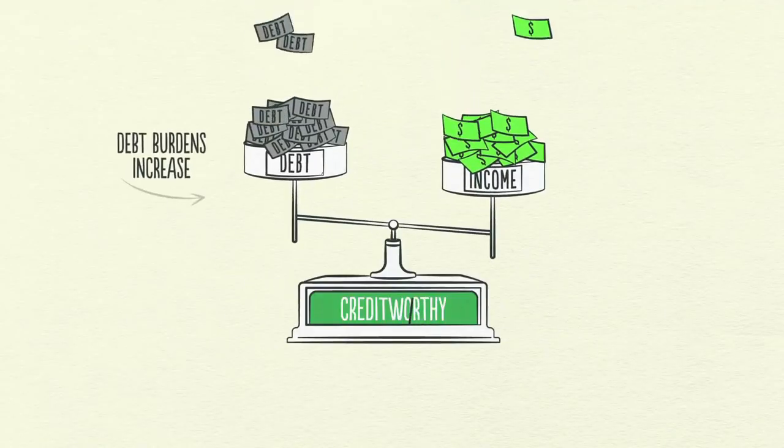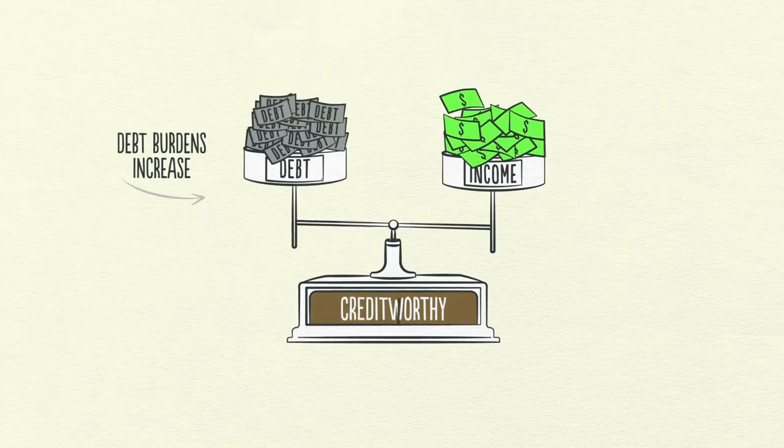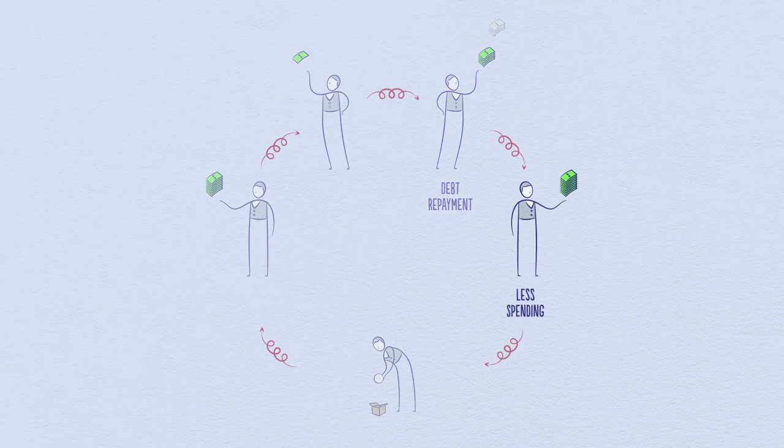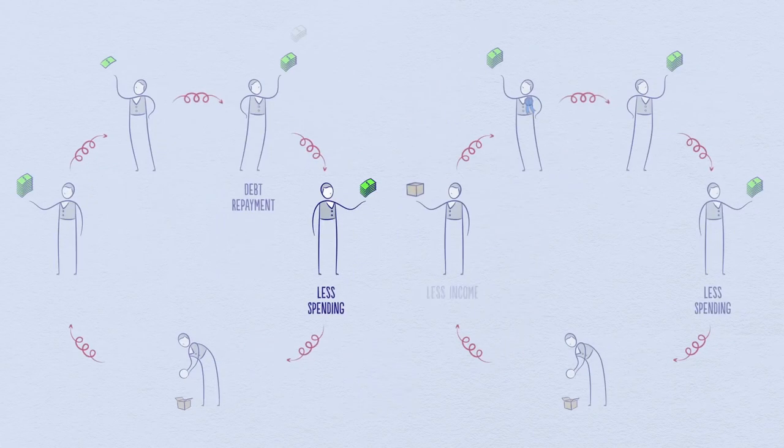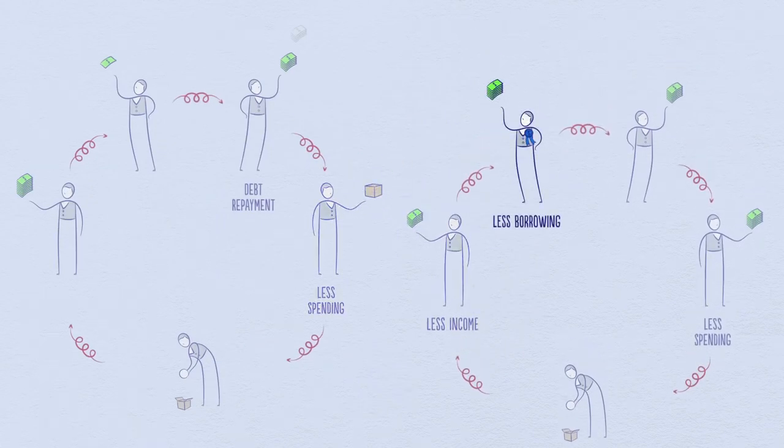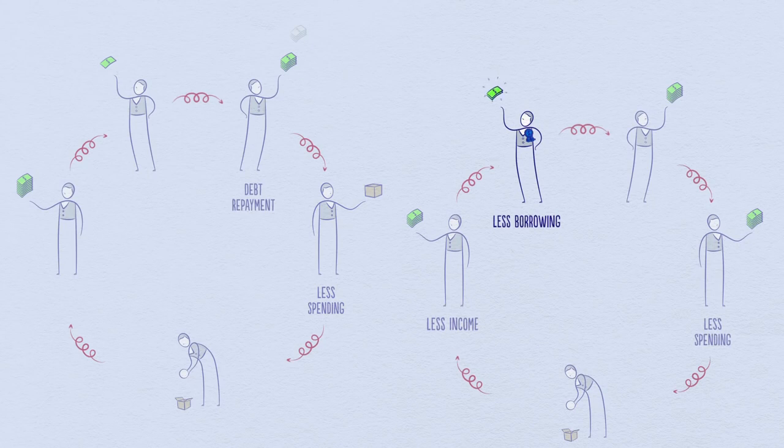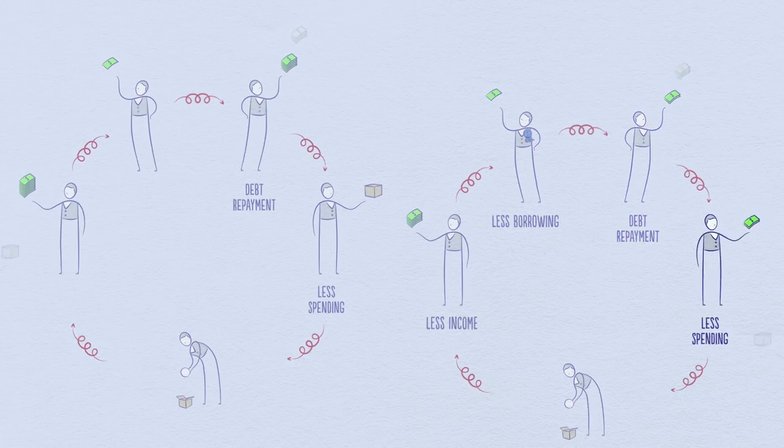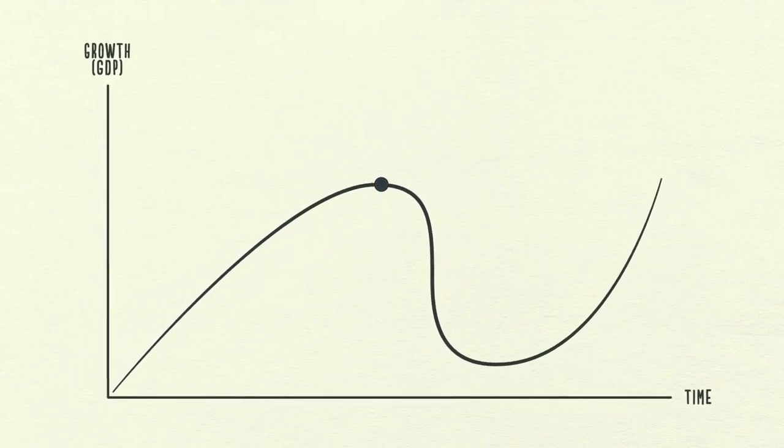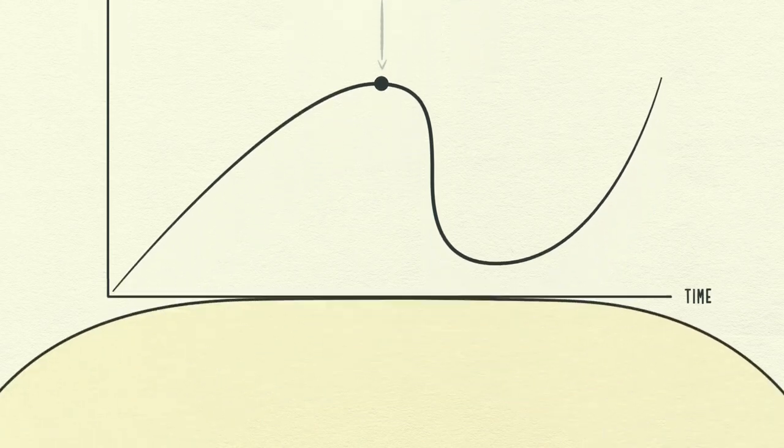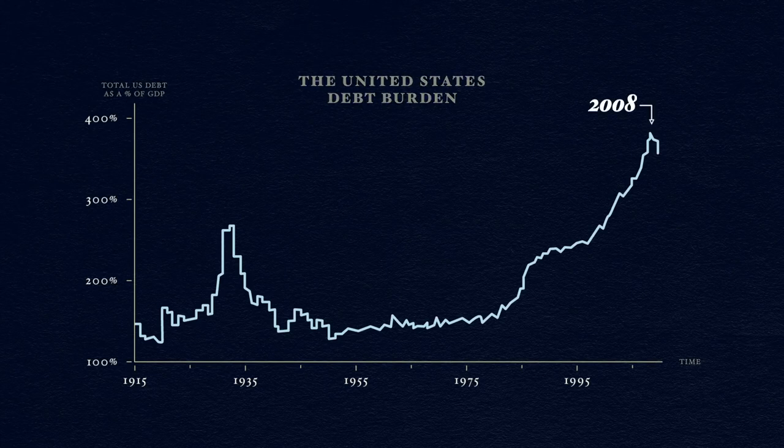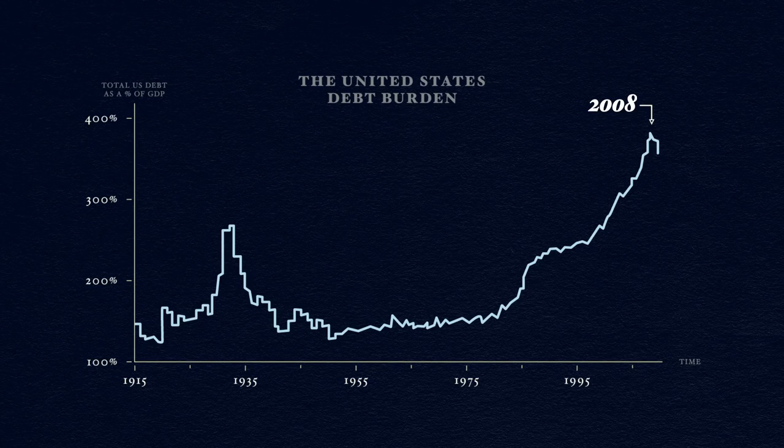Over decades, debt burdens slowly increase, creating larger and larger debt repayments. At some point, debt repayments start growing faster than incomes, forcing people to cut back on their spending. And since one person's spending is another person's income, incomes begin to go down, which makes people less creditworthy, causing borrowing to go down. Debt repayments continue to rise, which makes spending drop even further, and the cycle reverses itself. This is the long-term debt peak. Debt burdens have simply become too big. For the United States, Europe, and much of the rest of the world, this happened in 2008. It happened for the same reason it happened in Japan in 1989 and in the United States back in 1929.